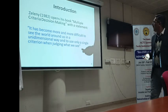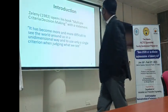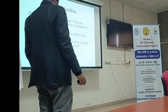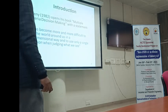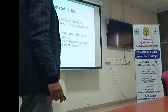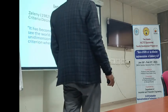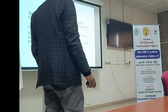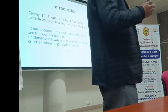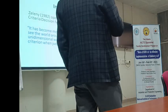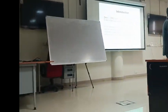Zeleny, in his book on multi-criteria decision making, opened with a statement in 1982: 'It has become more and more difficult to see the world around us in a unified way and to use only a single criteria when judging what we see.' Basically, what this means is that we have to make decisions on the basis of multiple criteria.